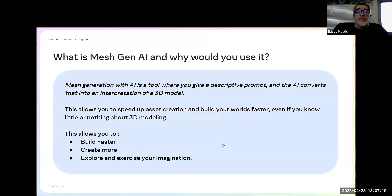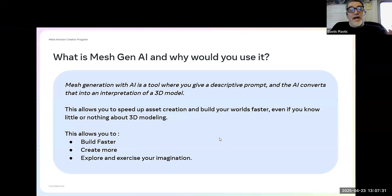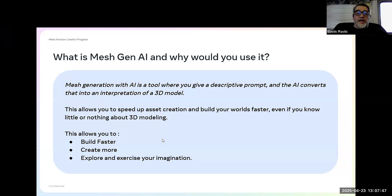What mesh generation is and why you use it: mesh generation with AI is a tool where you give it a descriptive prompt and the AI converts that into an interpretation of a 3D model. This allows you to speed up your asset creation, even if you know little or nothing about 3D modeling, which levels the playing field. It allows you to build faster, create more, and explore your imagination. Mesh gen AI is not the only tool — it can be used in combination with tools such as Blender or Maya. Space Glitter did a live generation build-along yesterday that covered a lot of cool things.